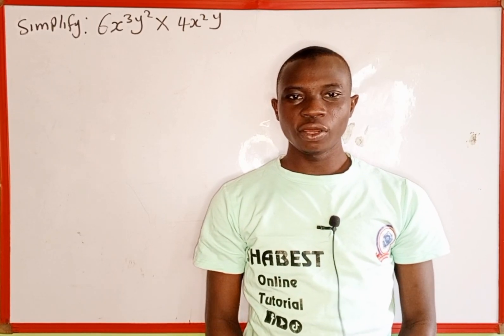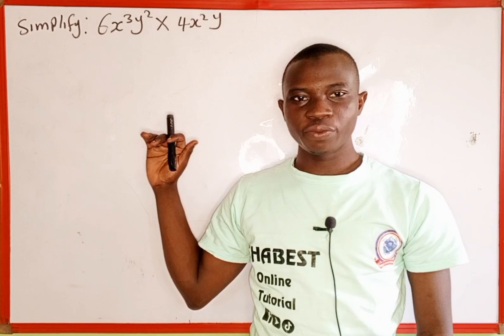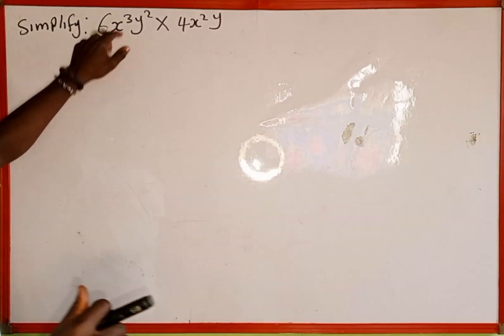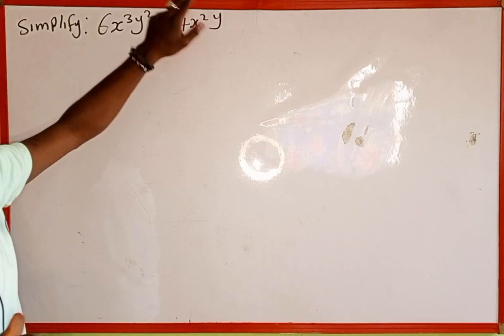Hello everyone, you're welcome back to Shabbat's online tutorial. In today's tutorial, we're going to learn how to simplify this algebraic expression: 6x³y² × 4x²y.